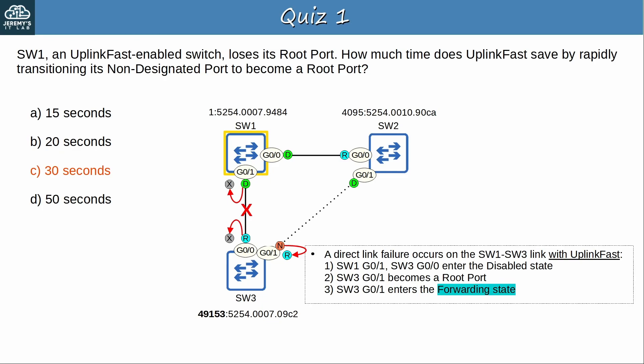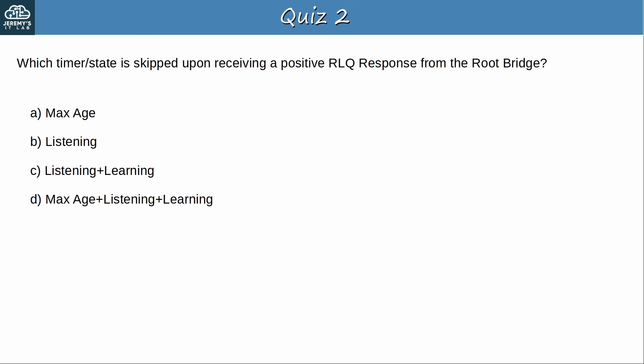Question 2: Which timer or state is skipped upon receiving a positive RLQ response from the root bridge? The answer is A: max age. Instead of ignoring the neighbor's inferior BPDUs until the max age timer expires, the switch will immediately transition its port to the designated role in the listening state. However, the port still needs to transition through the listening and learning states before forwarding.